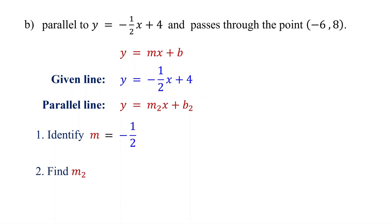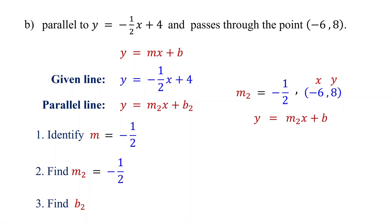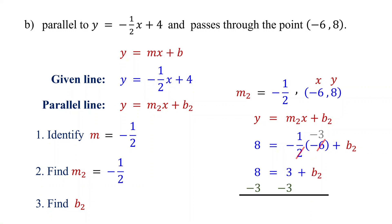Next, find the slope of the parallel line. Since parallel lines have the same slope, m2 also equals negative 1 half. Next, find the y-intercept of the parallel line using its slope and the given point. Substitute the values of m2, x, and y into y equals m2x plus b2. Replace y with 8, m2 with negative 1 half, and x with negative 6. Now solve for b2. Negative 6 divided by 2 is negative 3, and negative 1 times negative 3 is 3. Then subtract 3 from both sides to isolate b2. On the left, you get 5; on the right, these cancel, leaving b2. Therefore, b2 equals 5.